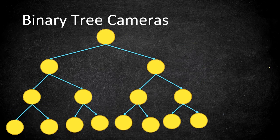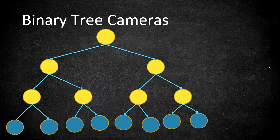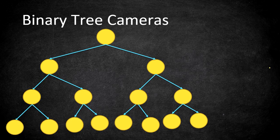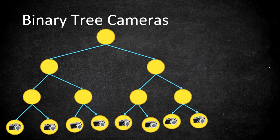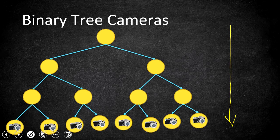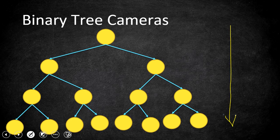For leaf nodes, we have only two options: keep cameras on the leaf nodes themselves, or on their parent. If we try to keep cameras on all leaf nodes, we end up with more cameras because the number of nodes increases at each level — the last level has the most nodes. So placing cameras on all leaf nodes is not optimal. Out of the two options, keeping cameras on the parent of leaf nodes is better, as it will definitely cover the leaf nodes.